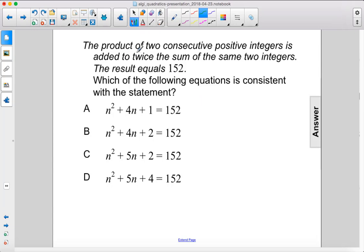So we have the product of two numbers in a row, which would be n times n plus 1, added to twice the sum of the same two integers, so n plus n plus 1. That gives us n squared plus n plus 2n plus 2n plus 2.